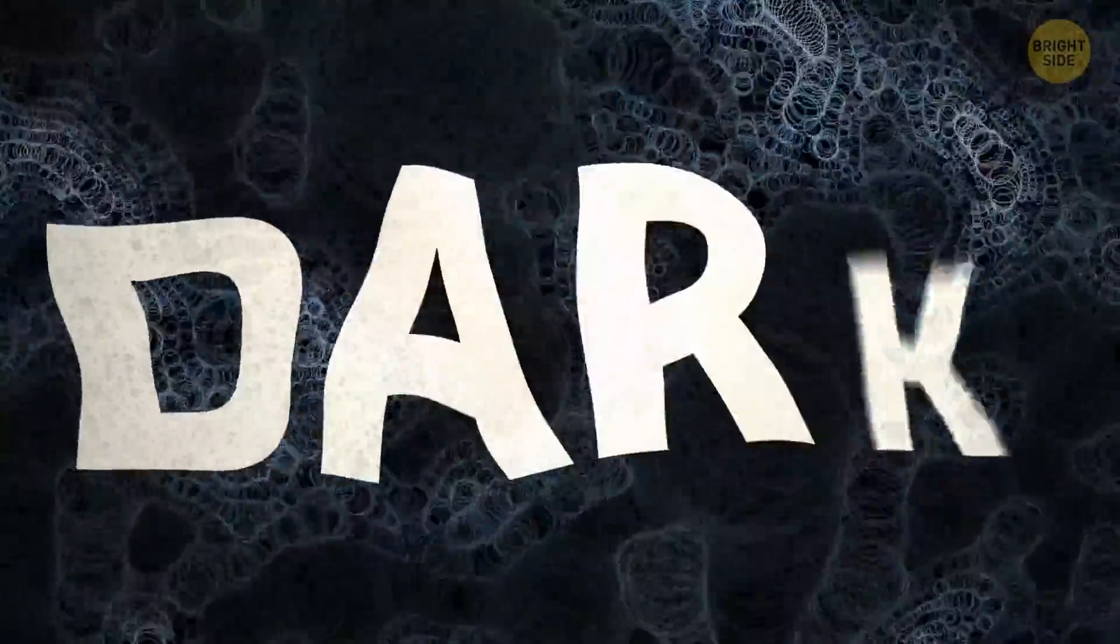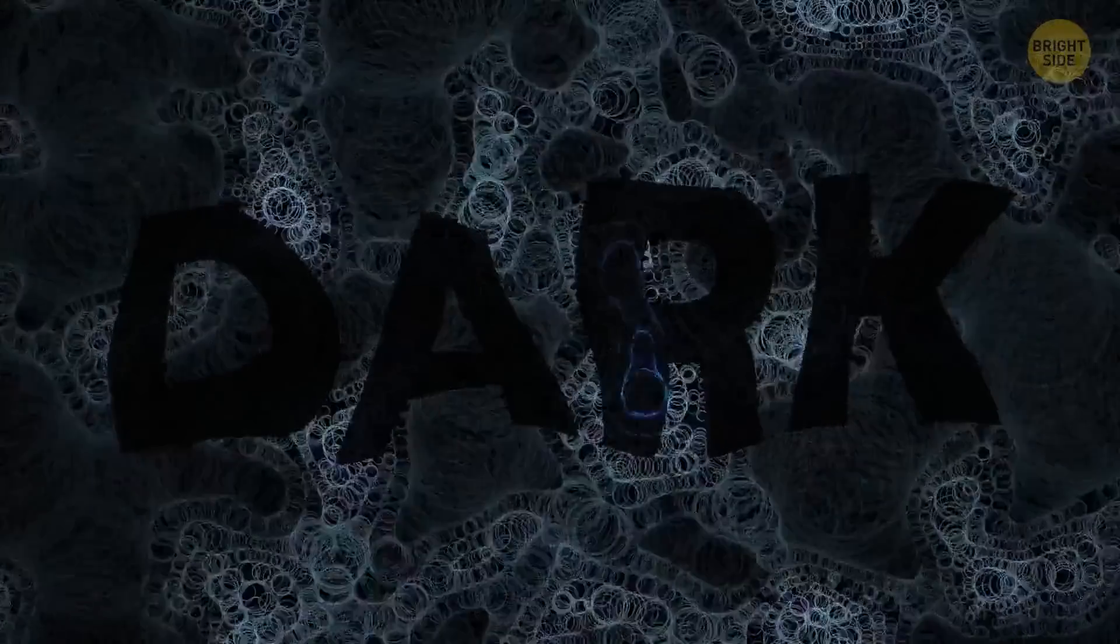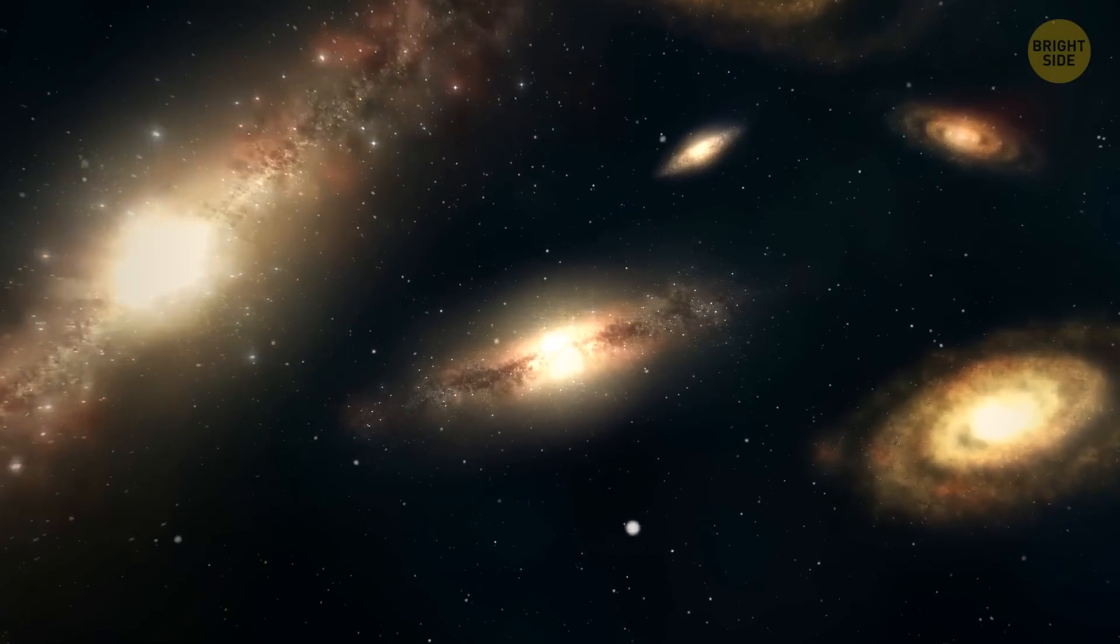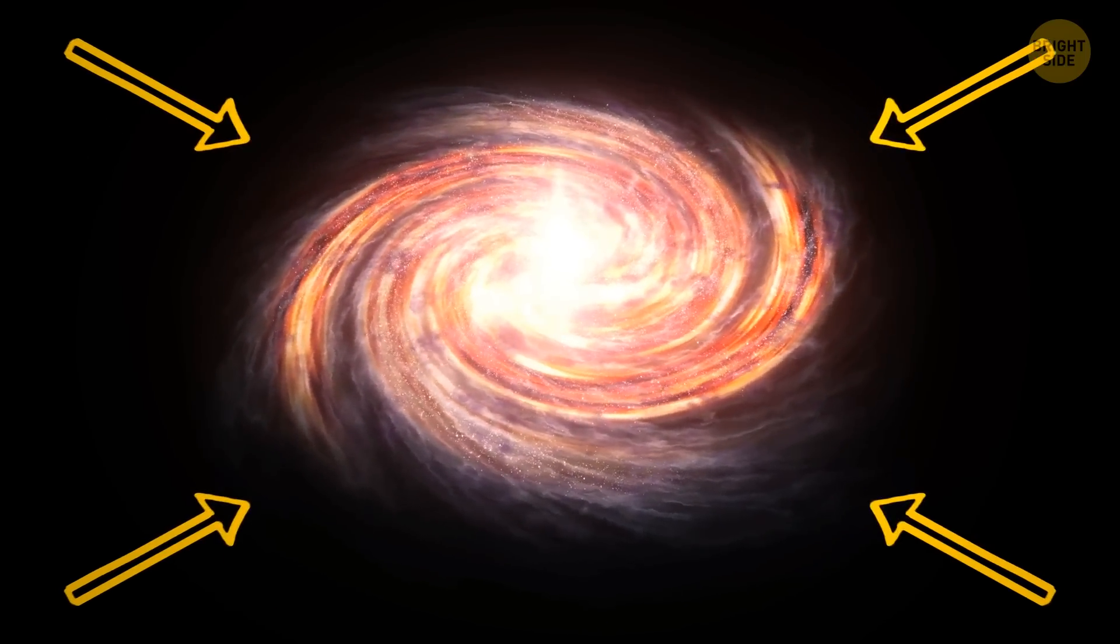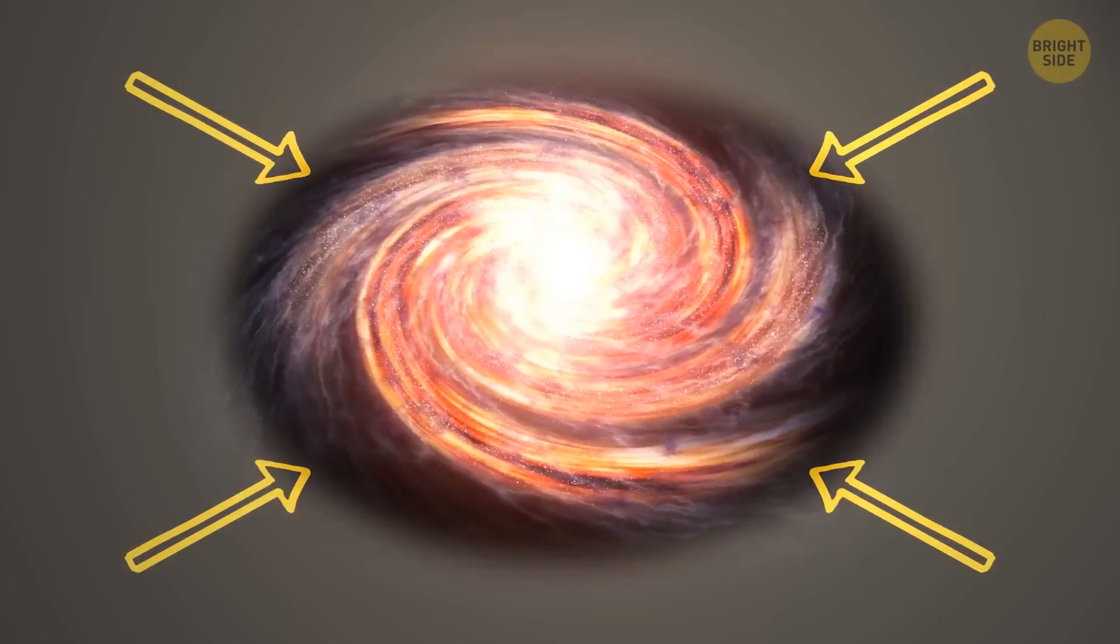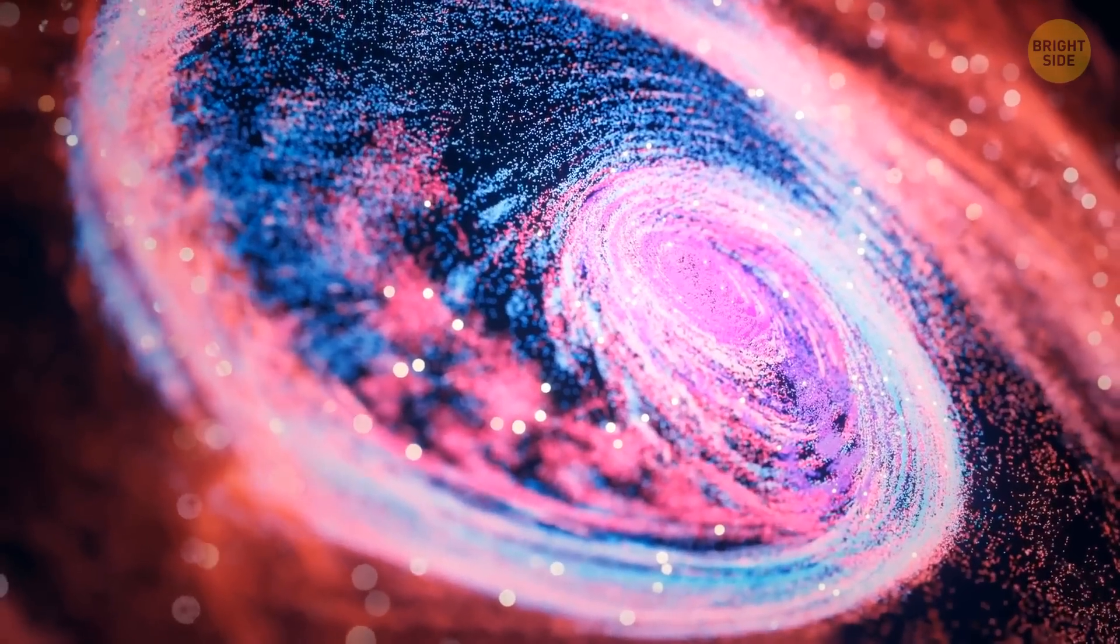Science calls it dark, because it doesn't interact with light or other forms of electromagnetic radiation we can detect. But we can see its effects. For example, when scientists look at how galaxies rotate, they find there's more mass pulling on them than what we can see with our telescopes. All that mysterious extra mass is actually dark matter. It's the reason why galaxies don't fly apart.